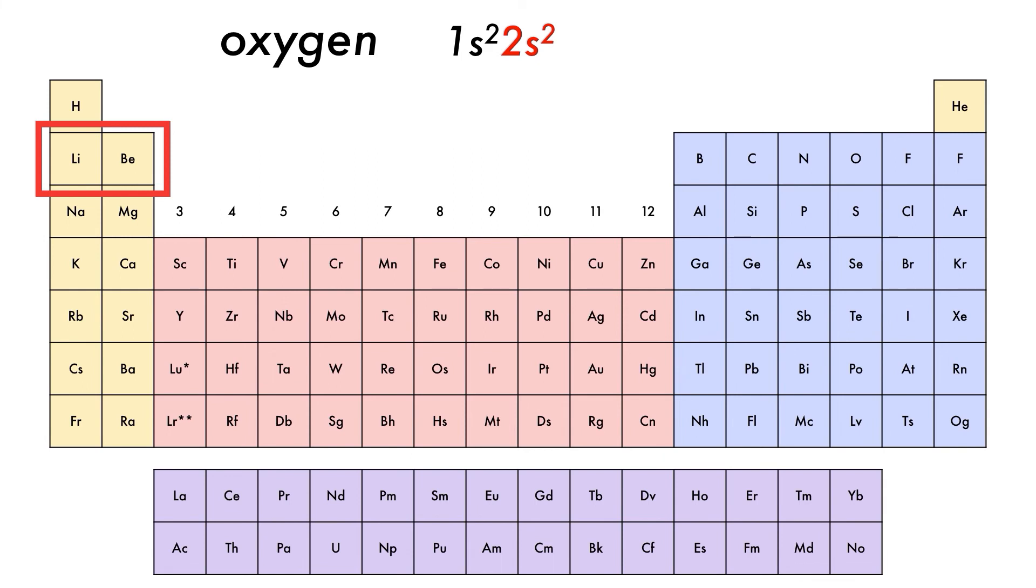Another way of writing out electronic configurations is to abbreviate the first part of the electronic configuration with the preceding noble element from the row above. For oxygen this would be helium. This represents the inner or core electrons after which we write down the outer or valence electrons as normal.